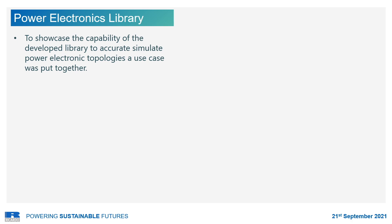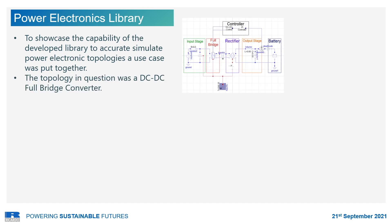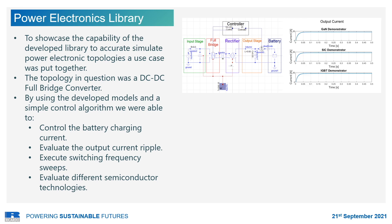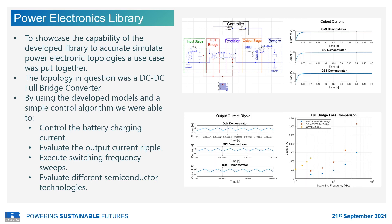A use case is presented focused on evaluating the performance of silicon IGBTs, silicon carbide MOSFETs, and gallium nitride MOSFETs in an onboard charger application. The topology selected was a hard switching DC-DC full bridge converter with passive rectification. By using a simple control algorithm, we were able to evaluate the charging current regulation, the output current ripple, and the effect on losses of different switching frequencies for the technologies under investigation.